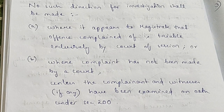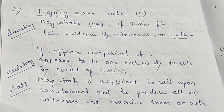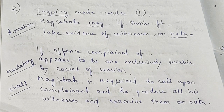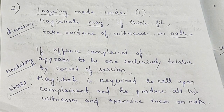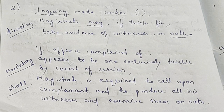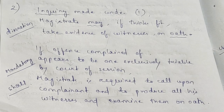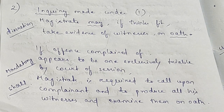Subsection 2 of Section 202 states: during an inquiry made under subsection 1, the magistrate may — discretionary power — if he thinks fit, take evidence of the witnesses on oath. But if the offense complained of appears to be one exclusively triable by a court of session, the magistrate shall call upon the complainant to produce all his witnesses and examine them on oath. So the first part is discretionary and the second part is mandatory.